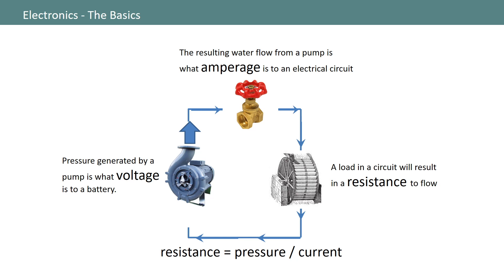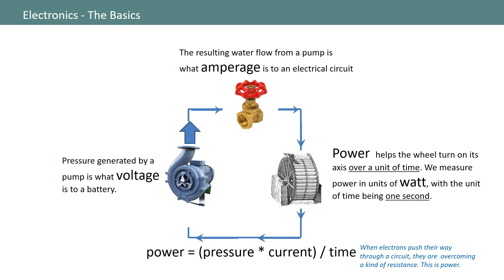Finally, using Ohm's Law, we know that if our pump generates one volt of pressure and the resulting current through the circuit is one amp, then our waterwheel is generating one ohm of resistance. Power is the next term we'll add to this metaphor. Power is basically the pressure of water multiplied by the associated current in your circuit, and it's what helps the waterwheel overcome resistance to turning on its bearing.